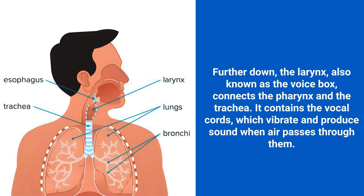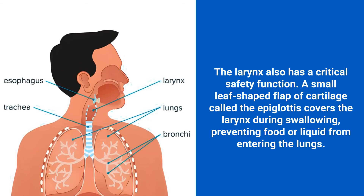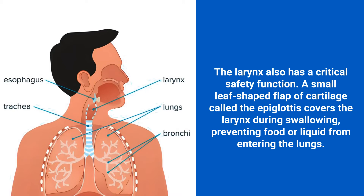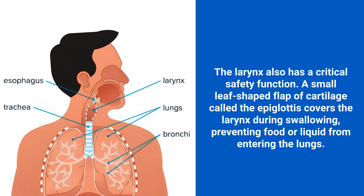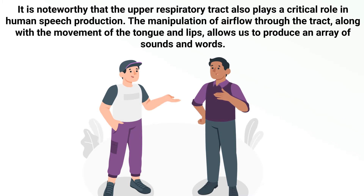The larynx contains the vocal cords, which vibrate and produce sound when air passes through them. The larynx also has a critical safety function: a small, leaf-shaped flap of cartilage called the epiglottis covers the larynx during swallowing, preventing food or liquid from entering the lungs.